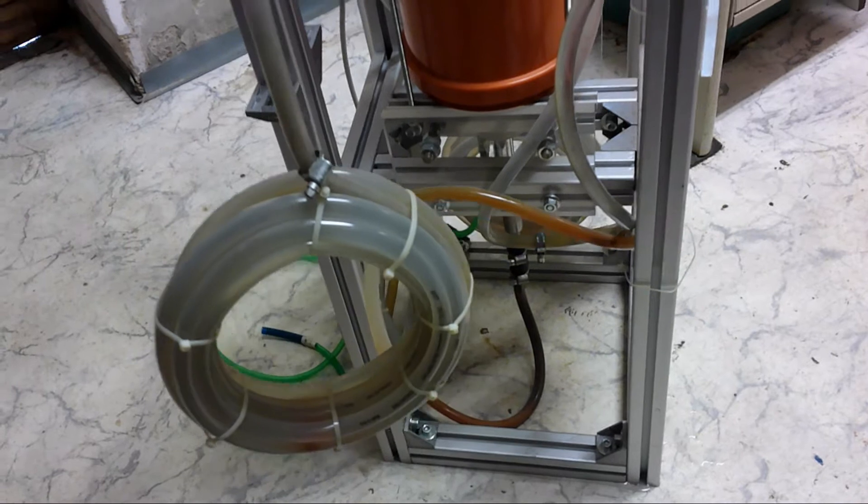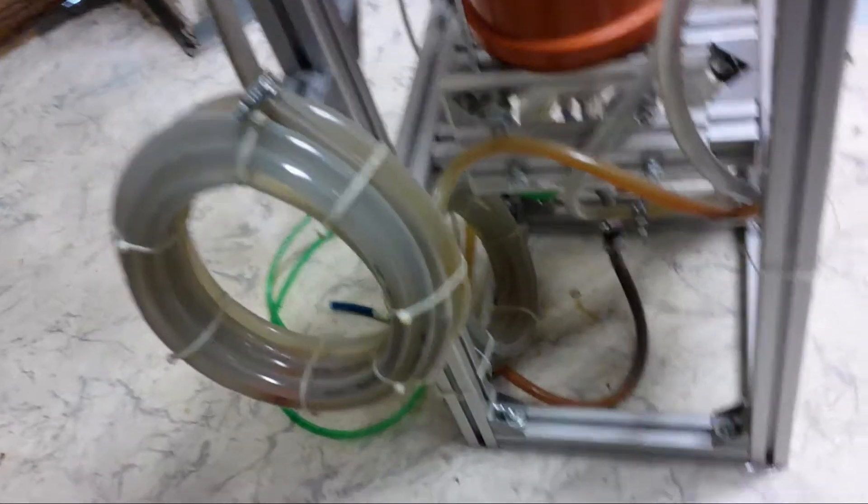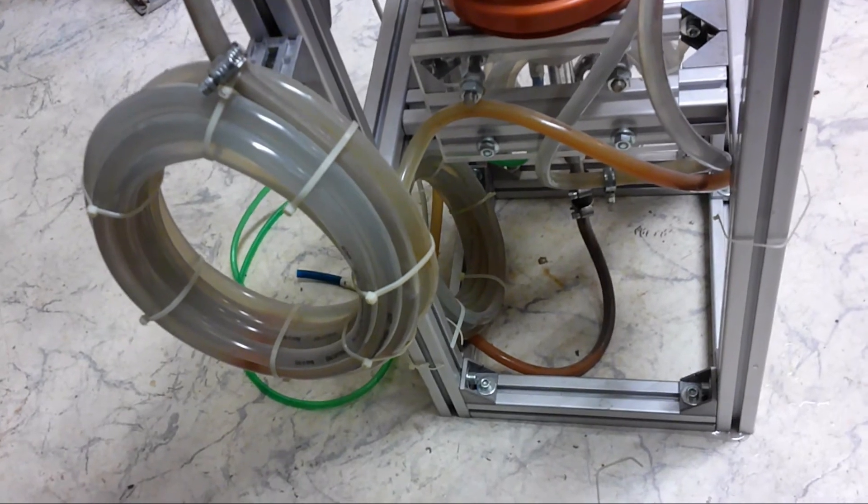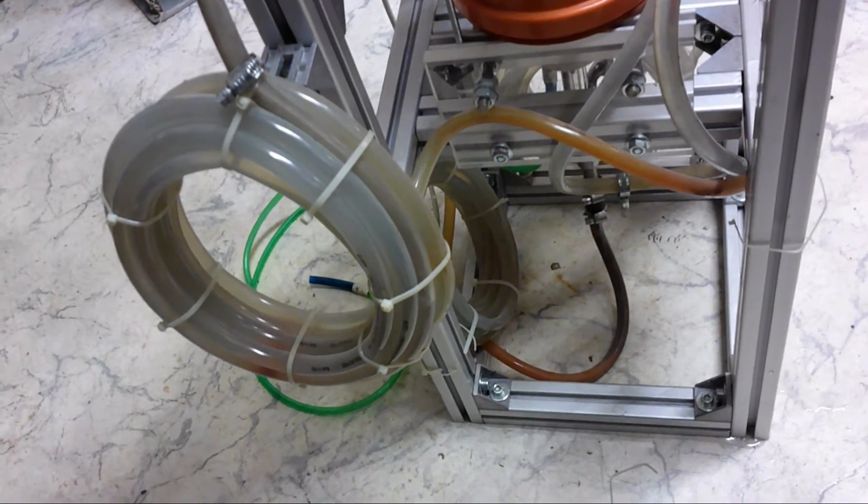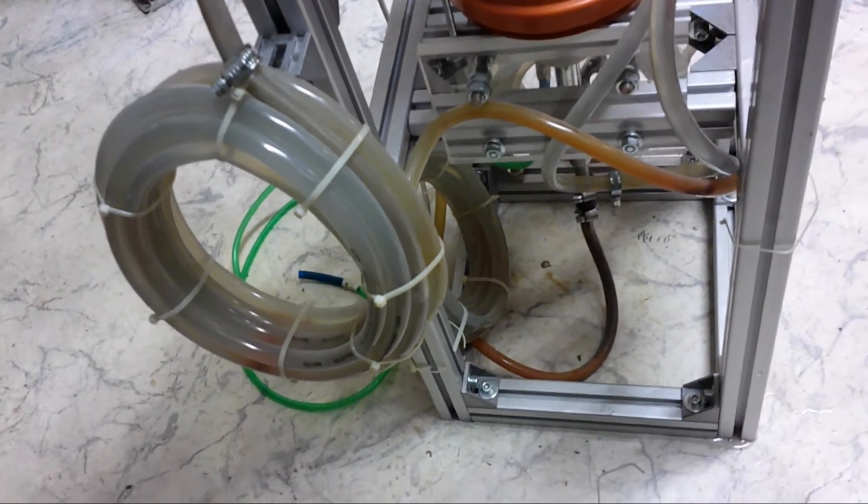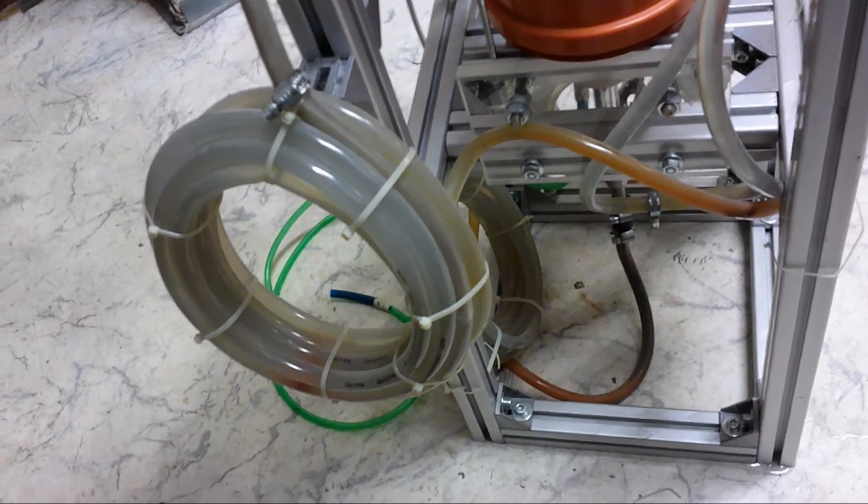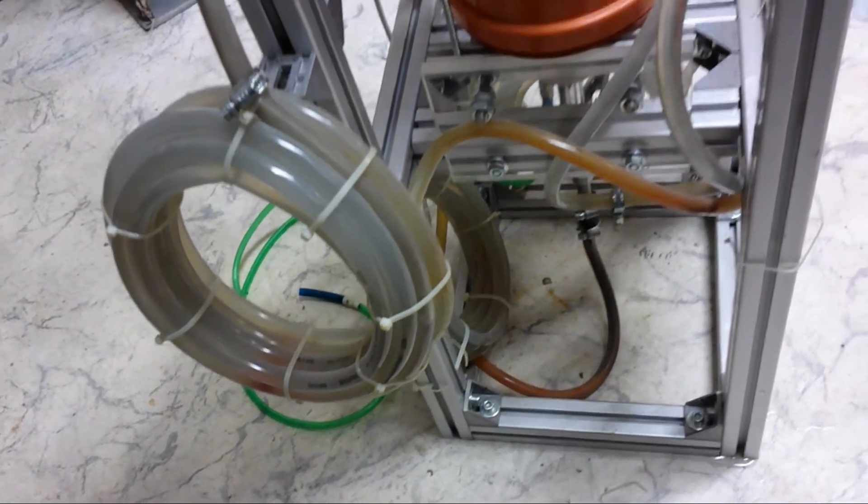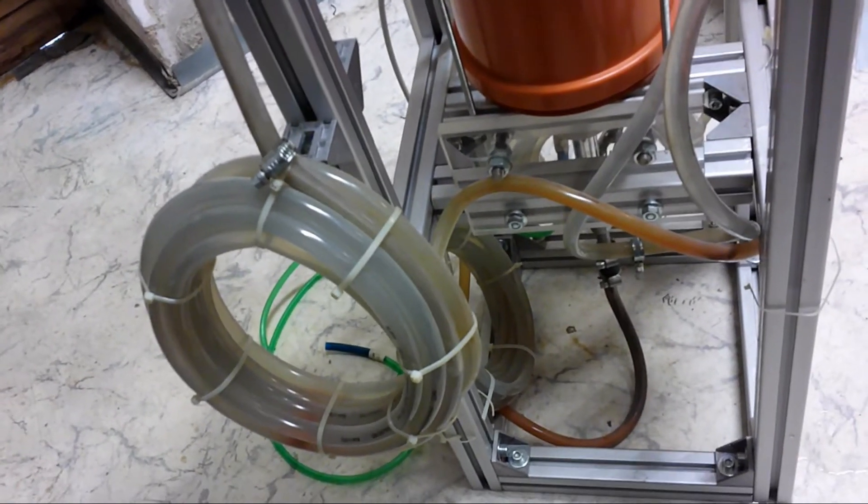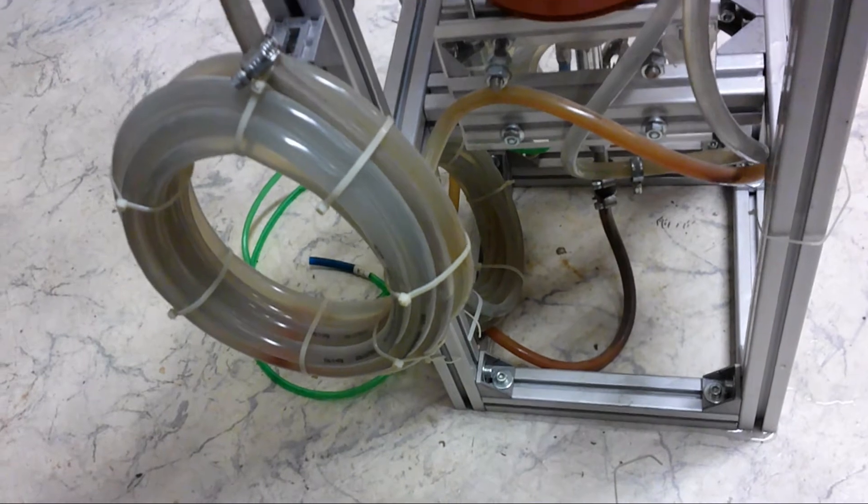You may ask yourself why I have used such a long tube here, why I made so many windings. As far as I remember correctly, I made this because I had actually the full high voltage potential across the whole water cooling system. So the long tube or the many windings is basically meant to increase the resistance in order to not have a big power loss from the shortage of the water cooling.